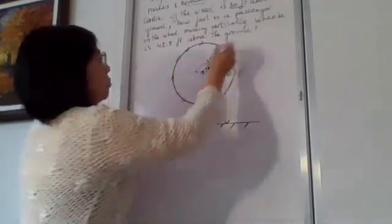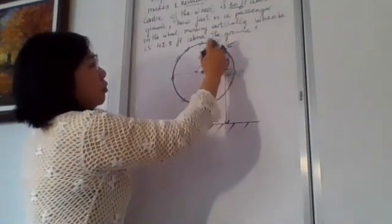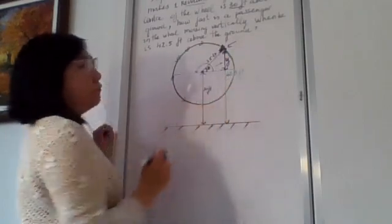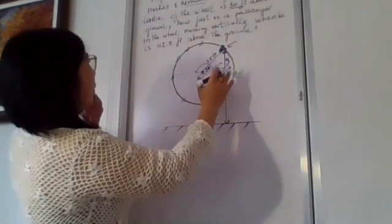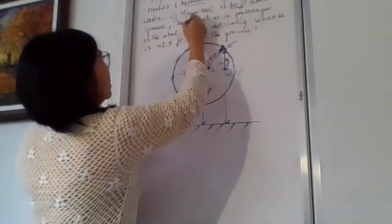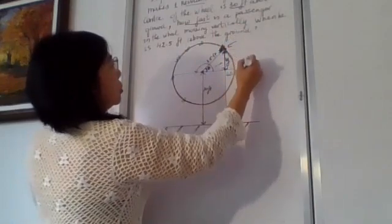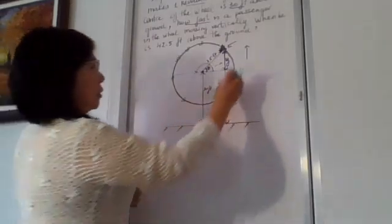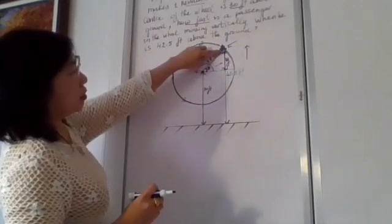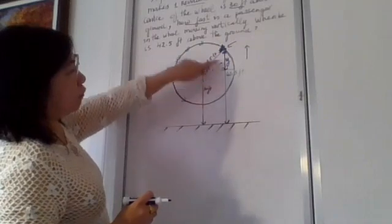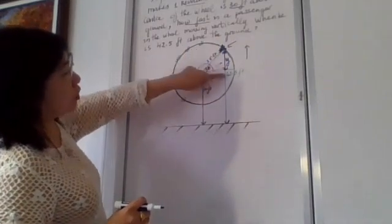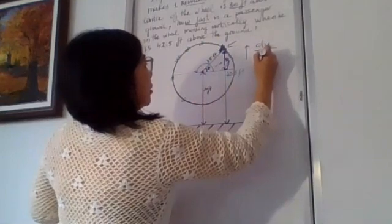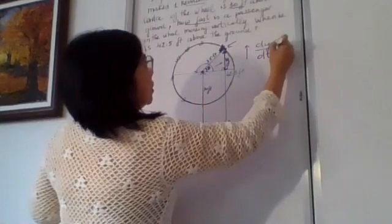At this point, he's sitting in the chair right on the wheel and his distance from the ground is 42.5 feet. The question asks how fast is the passenger moving vertically — that is asking for the rate of change at the moment when he is 42.5 feet above the ground. So dy over dt is what the question asks for.